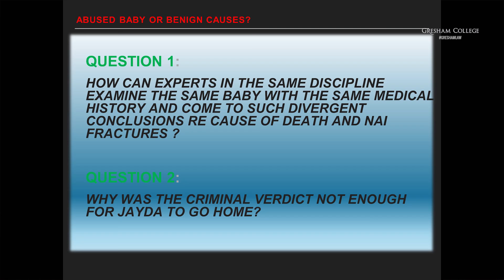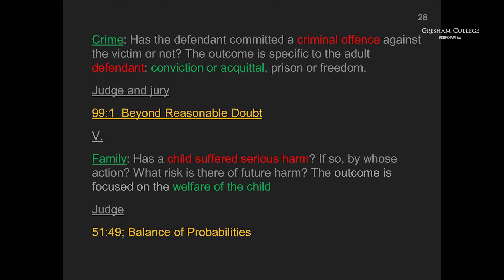Two questions: first, how can experts in the same discipline examine the same baby with the same medical history and come to such divergent conclusions about cause of death and inflicted fractures? Second, why was a criminal verdict not enough for Jada to go home? Remember the different standard of proof — that is why you can have different outcomes for the same child in both the criminal and family justice procedure. In our family jurisdiction we are not constrained by rules of evidence that prohibit hearsay; we look at what's called a wide canvas of evidence.